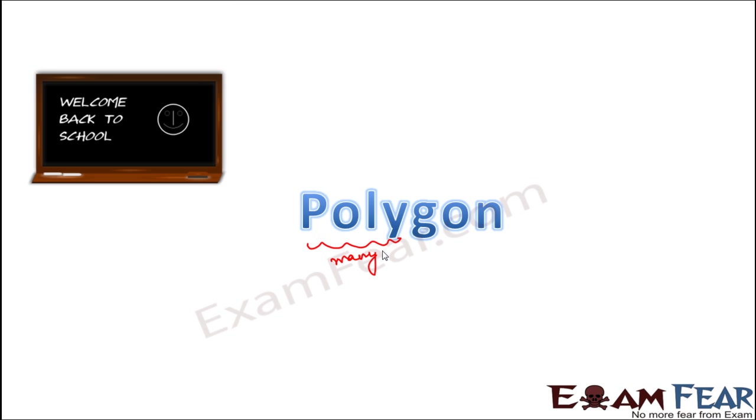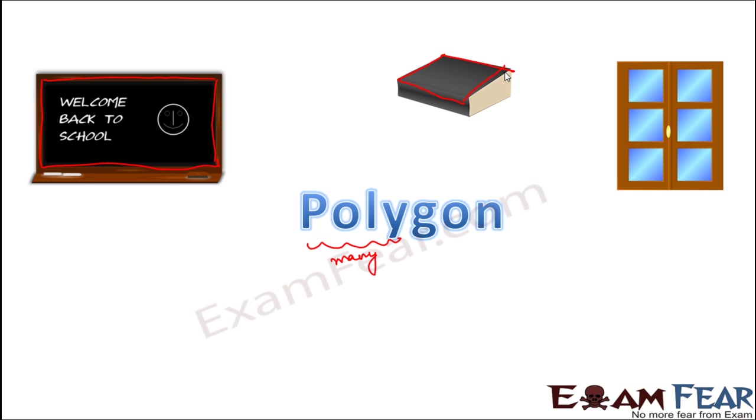Now think of certain things around us like you look at your blackboard. When you look at your blackboard, what is the shape of your blackboard? If you observe the boundary of the blackboard, you can see that there are lines outside. You think of a book, when you look at the shape of your book, you see that there are lines involved. You think of a window pane, you think of a kite. So everywhere you can see that certain lines and all of them together, they form a new shape altogether.